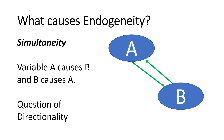Another cause is what they call simultaneity, which is where variable A causes B, but in retrospect B causes A, and now there's a question of directionality — which way does it actually flow to establish which one is influencing the other.